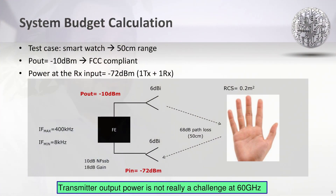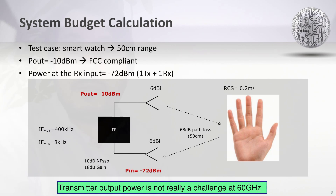The system level budget calculation can be demonstrated on the following example. In the case of gesture recognition, a typical sensing range is 50 centimeters. The output power is limited by FCC regulations. The input power into the receiver can be calculated as shown in the figure, and we can see that the input power is about minus 72 dBm. The typical distances of the hand from the cell phone result in IF frequencies in the range of 8 kHz to 400 kHz. In this case, an analog baseband that favors closer targets makes more sense.